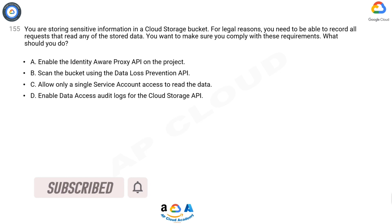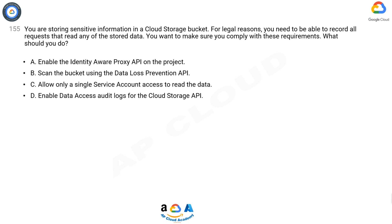A. Enable the Identity Aware Proxy API on the project. B. Scan the bucket using the Data Loss Prevention API. C. Allow only a single service account access to read the data. D. Enable Data Access Audit Logs for the Cloud Storage API.